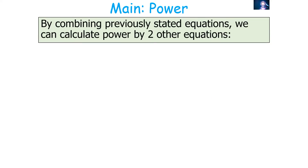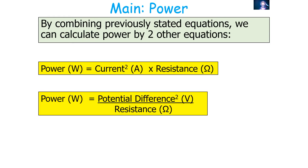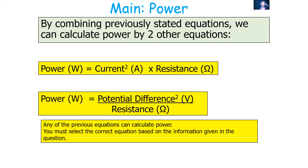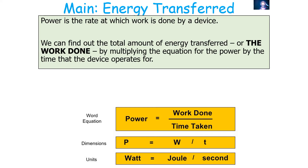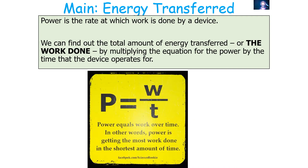By combining previously stated equations, power can be calculated three ways: P = I²R, P = V²/R, or P = VI. Any of these can be used — you must select the correct equation based on the information given. Remember, these equations calculate the power dissipated in one device, not the entire circuit. To find the total energy transferred (work done), multiply the power equation by the time the device operates, since P = W/t, so W = P·t.